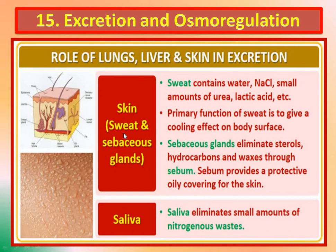Sweat is primarily produced for thermoregulation — that is, to maintain body temperature. But it also exudes substances like water, sodium chloride (NaCl), small amounts of urea, and lactic acid. The primary function of sweat is to give a cooling effect on the body surface.